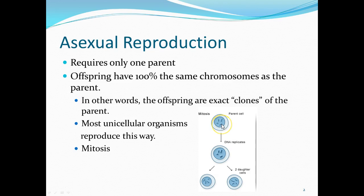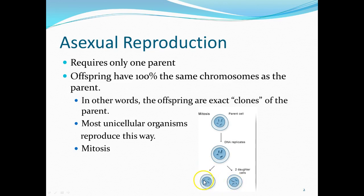When mitosis undergoes cellular division, we make two exact daughter cells from the same parent cell. So isn't that asexual reproduction? Yes, it is. The simplest form of asexual reproduction is mitosis, where we start off with only one parent and we end up with two identical offspring.